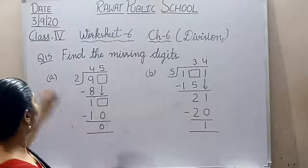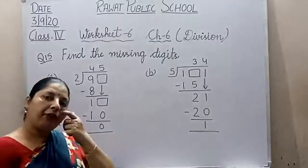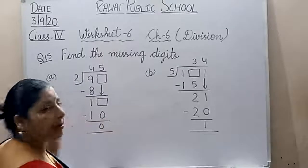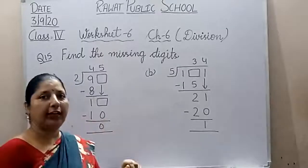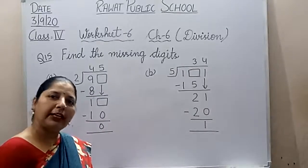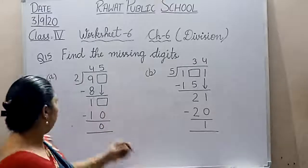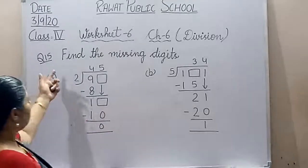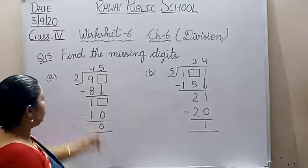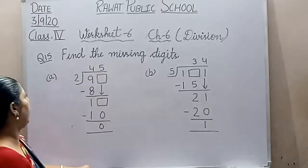Write down question number 15. Question number 13 and 14 we will do in first term revision. The sums we haven't done — about word problems — we will do those at that time. So question number 15 is: find the missing digits. In this question we need to find the missing digits.